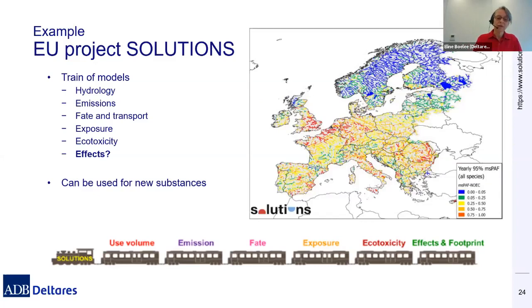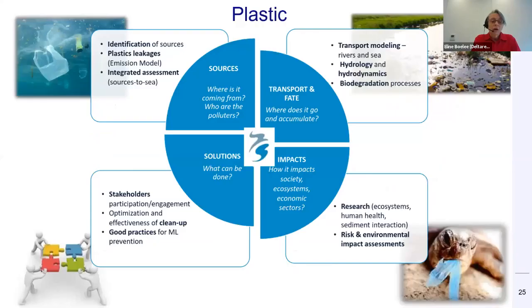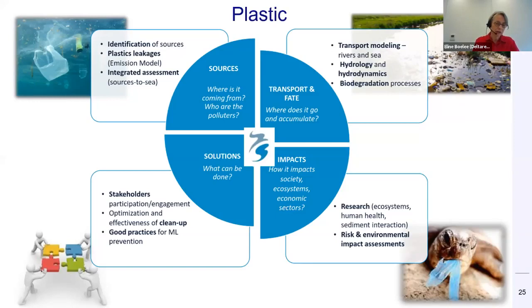This is sometimes more complicated and we still lack some knowledge, so it's something we continuously work on. An interesting thing about this model chain is that the approach can also be used for new substances and emerging compounds. For plastics, you can see how we look at all these aspects to understand what is happening — where the plastic is coming from, who the polluters are, and once plastic is in the water, what chemicals leach from it. We model the macroplastics but also the compounds. We look at what it does to ecology and human health. We try to come up with solutions, such as the bubble screens applied in the Netherlands.